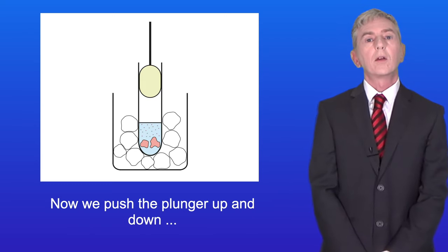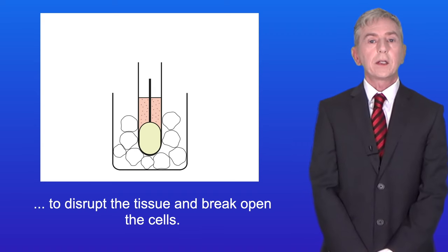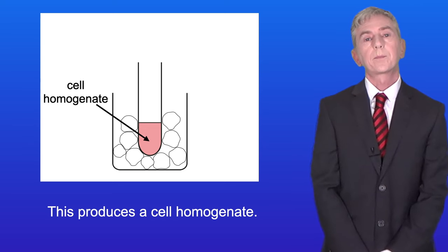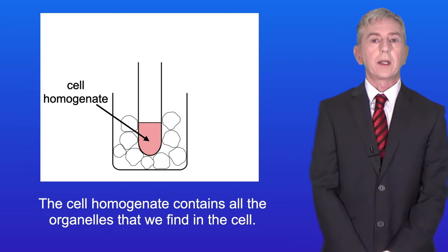Now we push the plunger up and down to disrupt the tissue and break open the cells. This produces a cell homogenate. The cell homogenate contains all the organelles that we find in the cell.